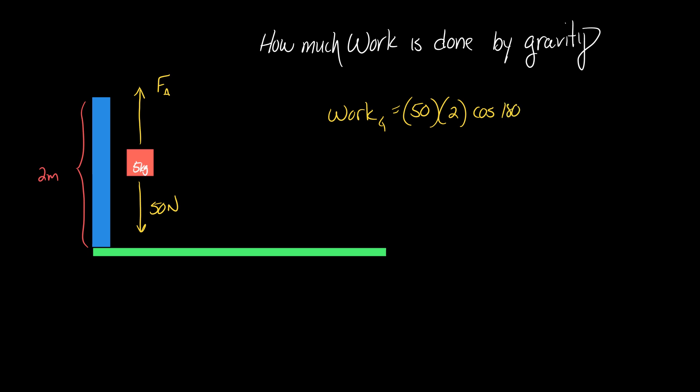180 degrees. So, on the trip up, negative 100 joules of work is done on the box by gravity. I don't know how much work I do on the box, necessarily, but that's how much is done by gravity.